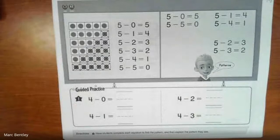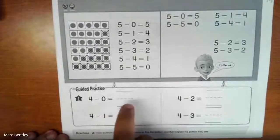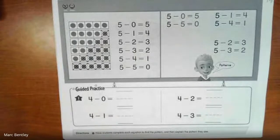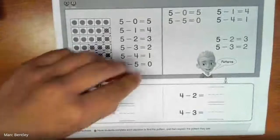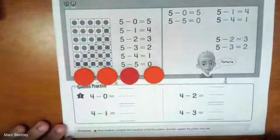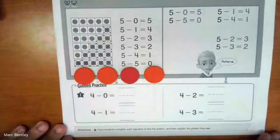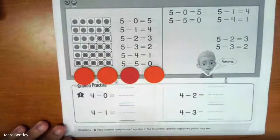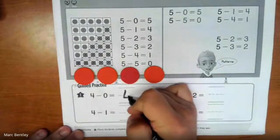So the first one says 4 minus 0 equals blank. So if I have 4 red counters, 1, 2, 3, 4, and I don't take any away, how many red counters am I left with? So I still have my original 4. So 4 minus 0 equals 4.